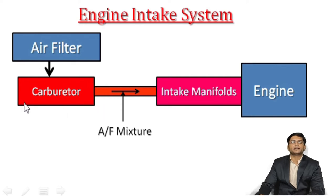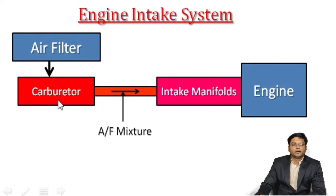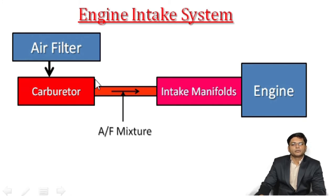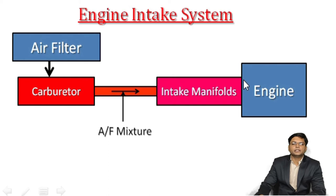The function of the carburetor is to prepare the air and fuel mixture. Fuel is taken from the fuel tank and the carburetor prepares the air and fuel mixture. Through this line, the air and fuel mixture is supplied via the intake manifold to the engine. This is all this figure is about — the engine intake system.